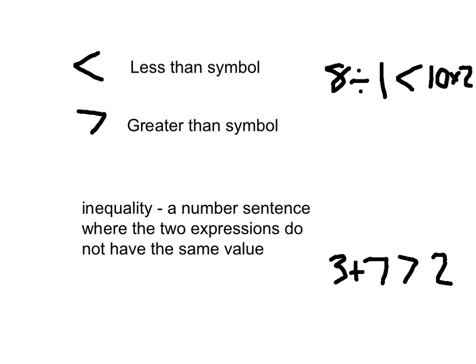Read that whole number sentence to yourself. Now read it together with me: 8 divided by 1 is less than 10 plus 2. A number sentence where the two expressions do not have the same value. I'm circling an expression here that has a value of 10. I'm circling an expression here — a single number can be an expression — that has that value of 2. 10 is bigger than 2.